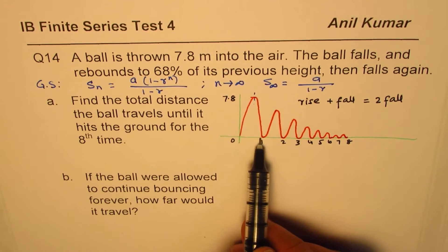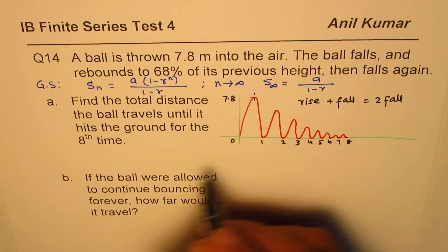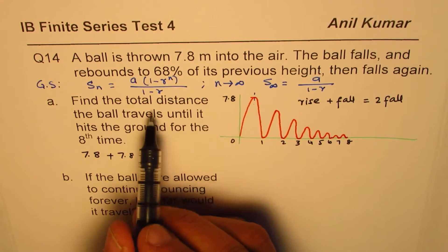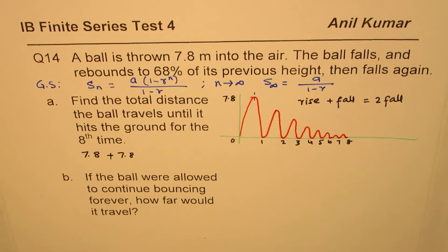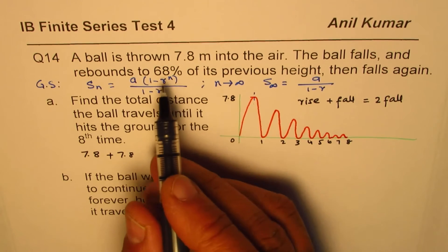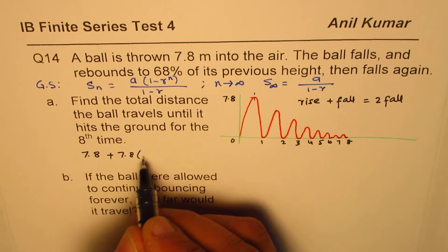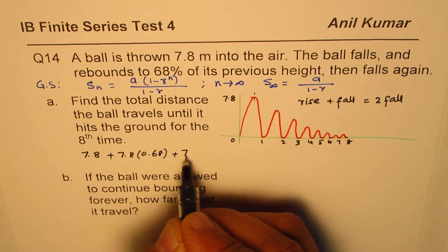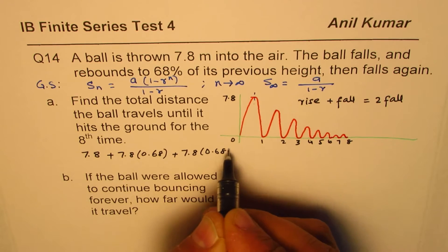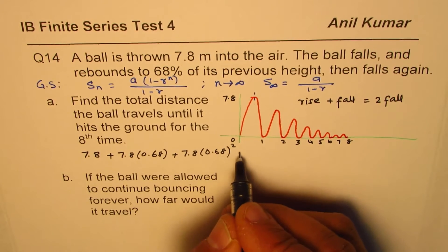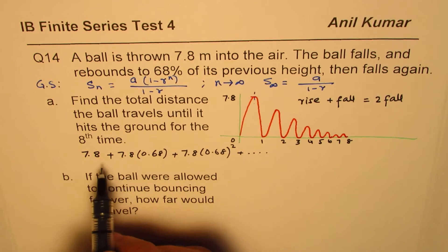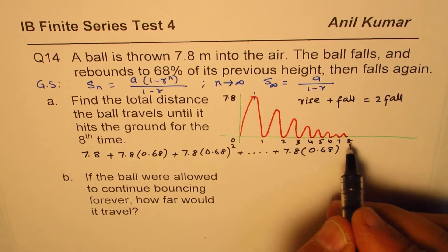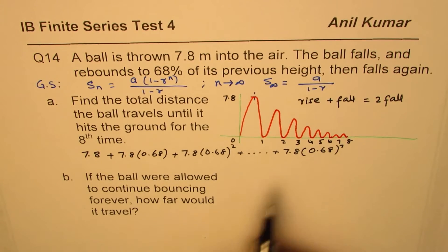So S of N is a geometric series starting with 7.8. The series is: 7.8, then 7.8 times 0.68, then 7.8 times 0.68 squared, and so on. The last term for the eighth hit is 7.8 times 0.68 to the power of (8 minus 1), which is 7. That becomes your geometric series.